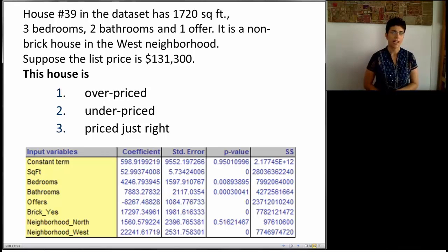Okay, now here's another question. How can we use this information on the coefficients to actually say something about house pricing? So there's a certain house in this file, house number 39, that has these specifications that are written on the slide. 1720 square feet, three bedrooms, two bathrooms, and a single offer. This is a non-brick house in the west neighborhood. And let's say that this house was posted with a list price of $131,300. What do you think about this house? Take a minute, stop the video, and see whether you think this house is overpriced, underpriced, or priced just right. You'll need the output that's given on this slide.